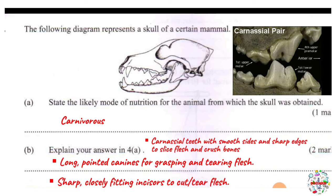Our last point is the carnassial teeth. Carnassial teeth are specialized teeth found in carnivores — actually modified premolars and molars. Their function is to slice flesh and crush bones. They are adapted with very sharp edges for slicing flesh, and they are arranged to crisscross and interlock with one another, allowing them to easily slice through flesh and crush bones.